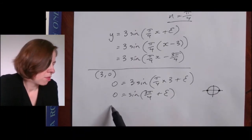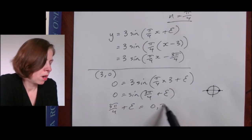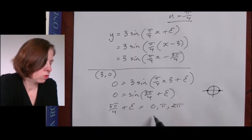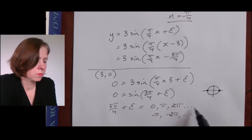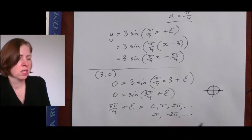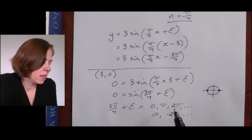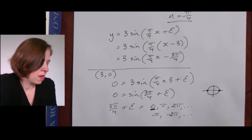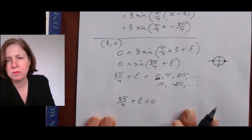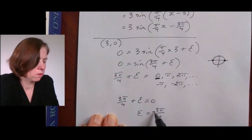So three pi on four plus epsilon can equal zero, pi, two pi, negative pi, negative two pi, and so on. Since I just want the horizontal shift, I'll use the zero value: three pi on four plus epsilon equals zero, giving epsilon equals negative three pi on four.